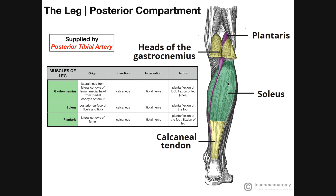But in anatomical terms, up here, which contains the quadriceps and the hamstring muscles, this would actually be the thigh, and this down here is the leg. So if you're looking for the hamstring muscles, that's in a separate video. Here, we'll be discussing the origins, insertions, innervations, actions, and a few other aspects of these muscles in the leg's posterior compartment.